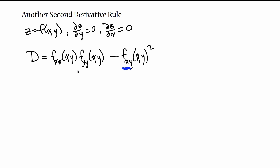The mixed partial fxy may be new to you. For fxx, you take the derivative with respect to x and then take the derivative with respect to x again. For fxy, you take the partial derivative with respect to x, and then take the partial derivative of that with respect to y. For example, if z equals x² minus 2y, the first partial derivative with respect to x is 2x, and then the partial derivative of that with respect to y is zero, because there are no y terms.